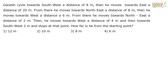Ganesh cycles towards southwest a distance of eight meters, then he moves towards east a distance of 20 meters. From there he moves towards northeast a distance of eight meters, then he moves towards west a distance of six meters, and so on. The question asks us to trace the path of Ganesh and find out how far he is from the starting point.